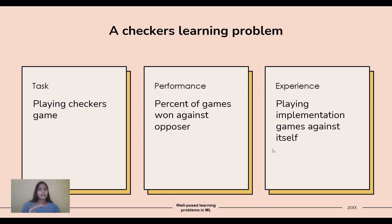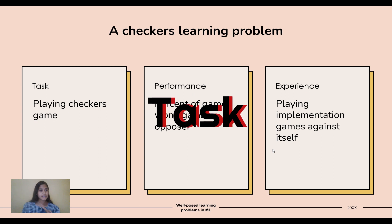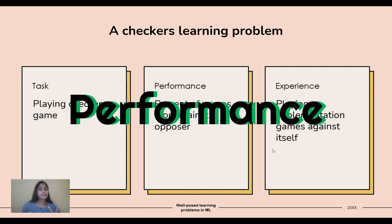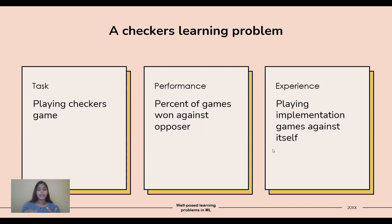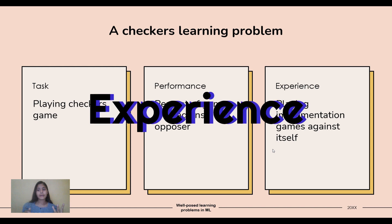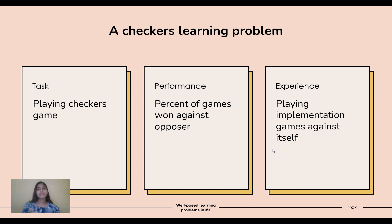The next example is the checkers learning problem. Checkers is a game where you defeat your opponent. The task is playing checkers, the performance is the percentage of games won against the opponent, and the experience is playing practice games against itself. It observes how the opponent plays, analyzes what steps to take, and improves its performance over time.